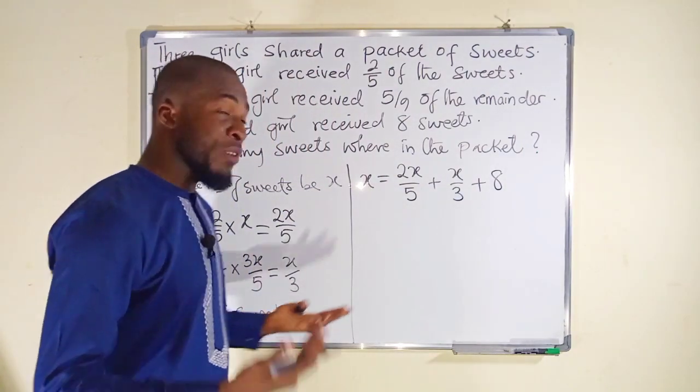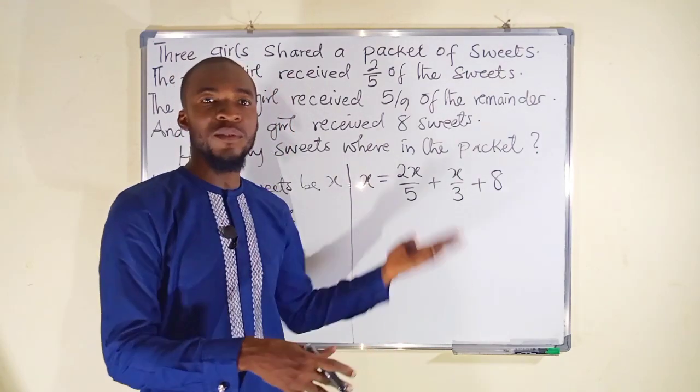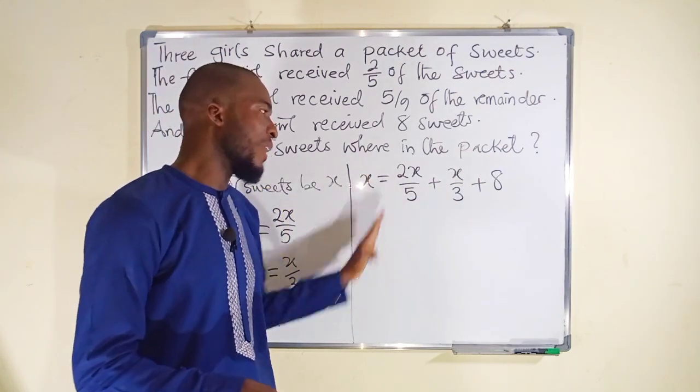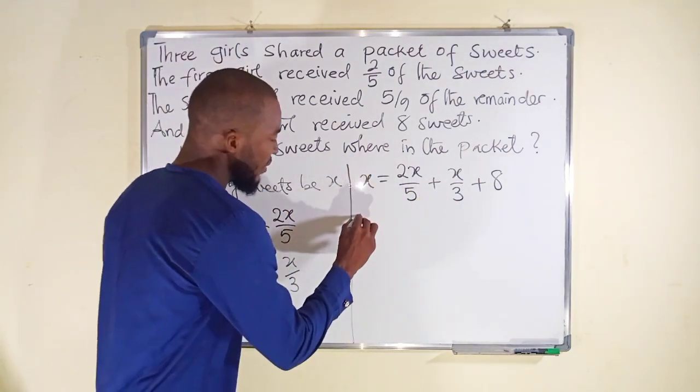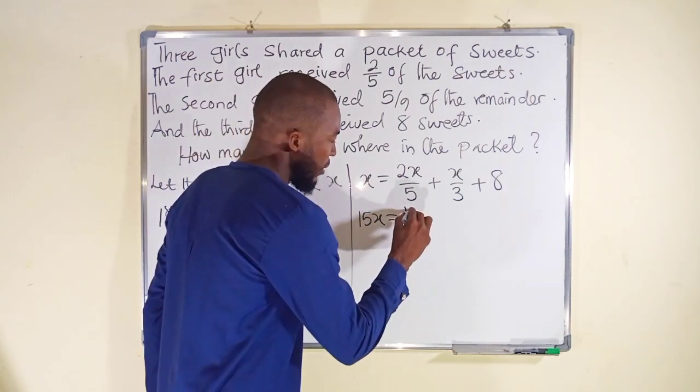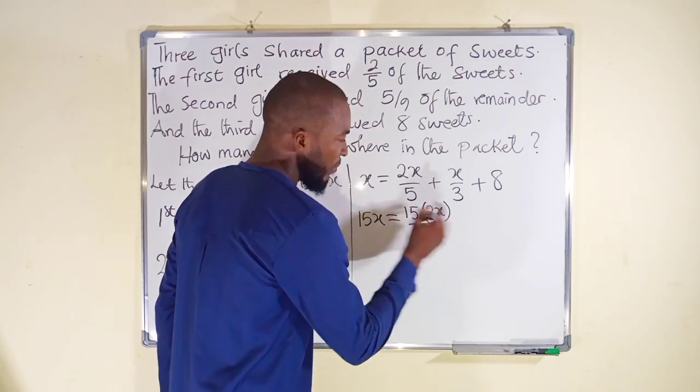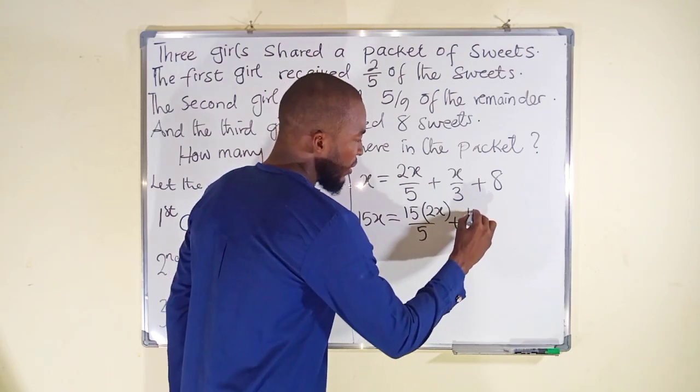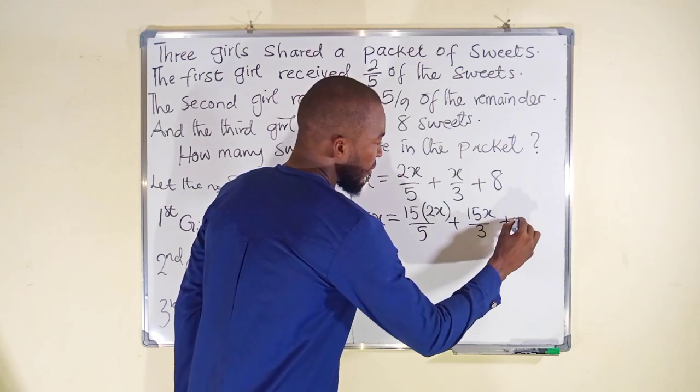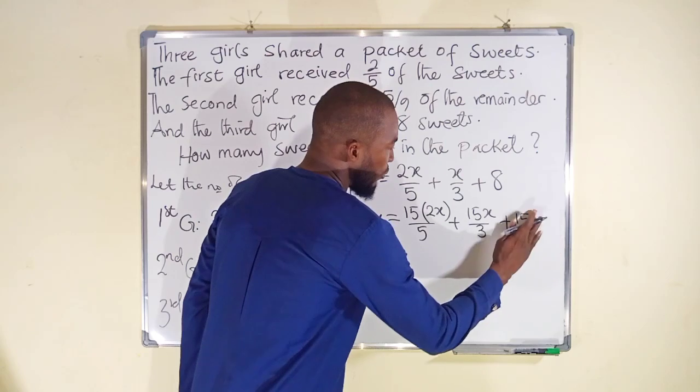It is always advisable that you should get rid of fractions while dealing with equations that involve fractions. The LCM between 5 and 3 is 15, so we can multiply each term by 15. x times 15 is 15x equals 15 multiplied by 2x divided by 5, plus 15 multiplied by x divided by 3, plus 15 multiplied by 8.